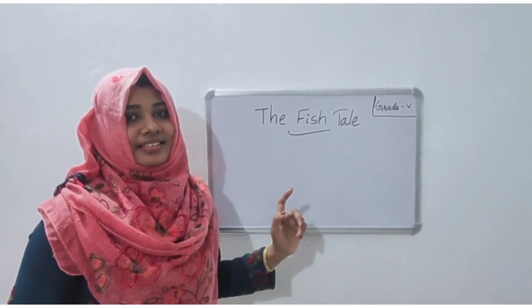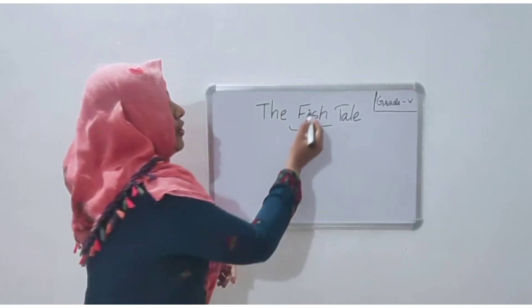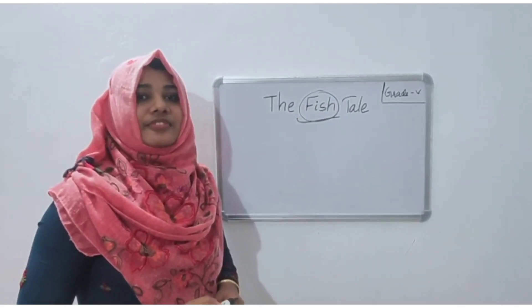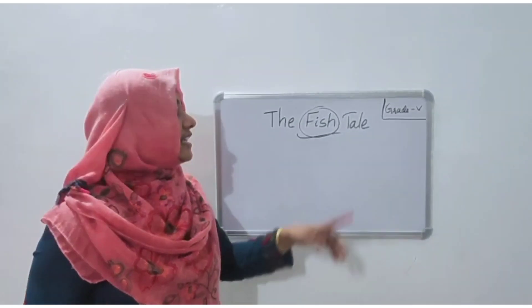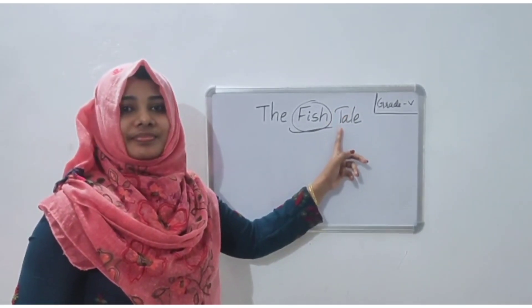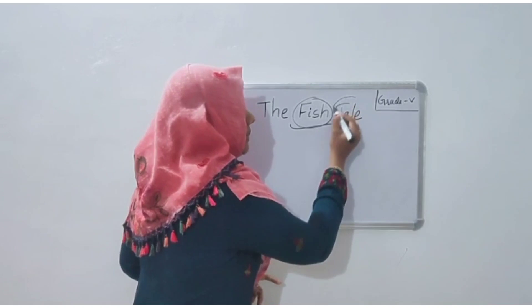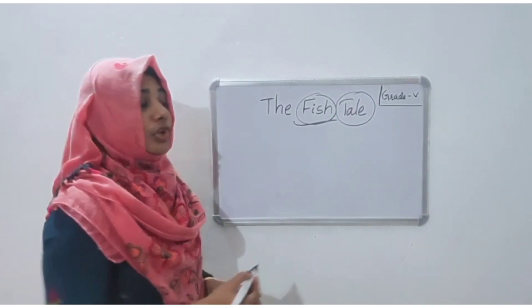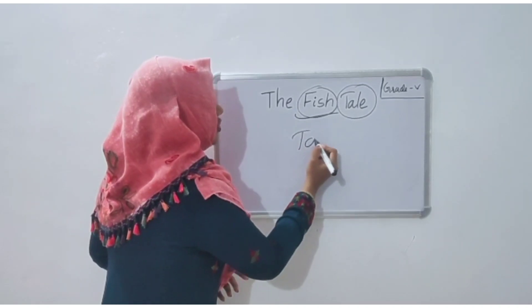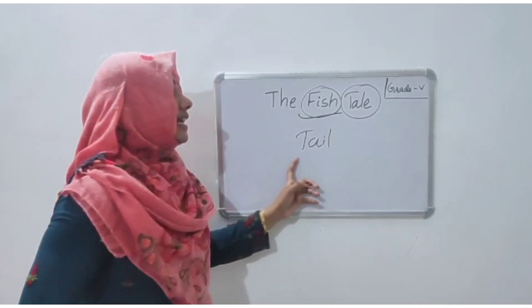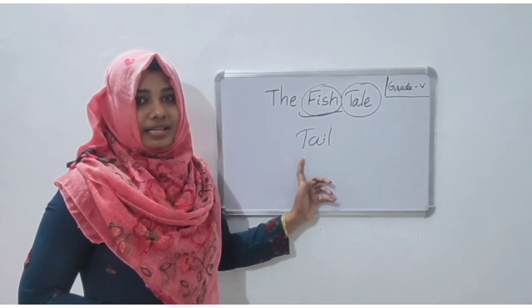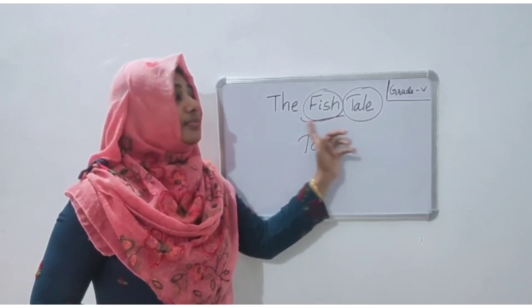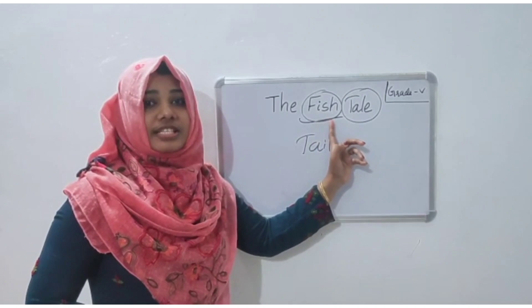The fish tail. As we all know, fish is the water animal. It lives in water. What is meant by tail? Tail means story — not this time. This time it means the hindmost part of an animal. So our chapter name is the fish tail. The fish tail means the fish story.